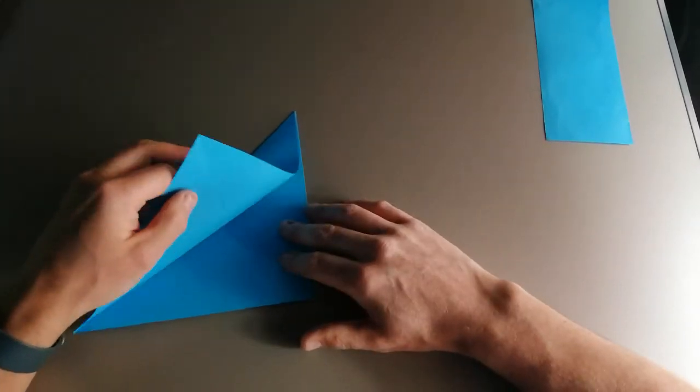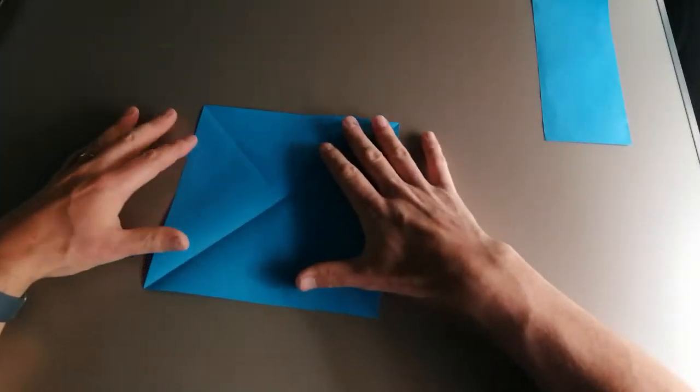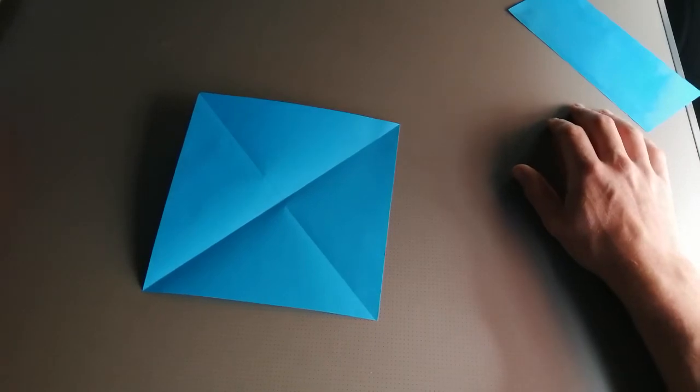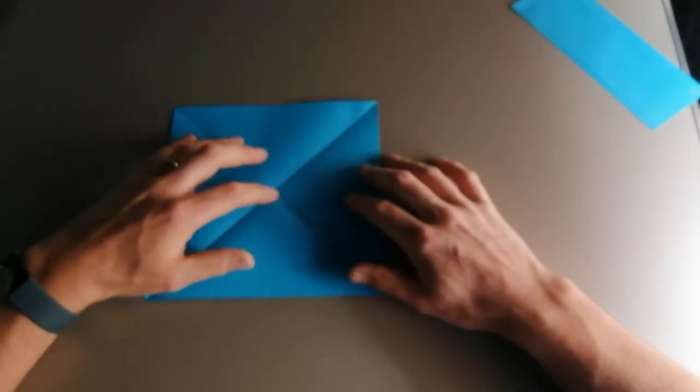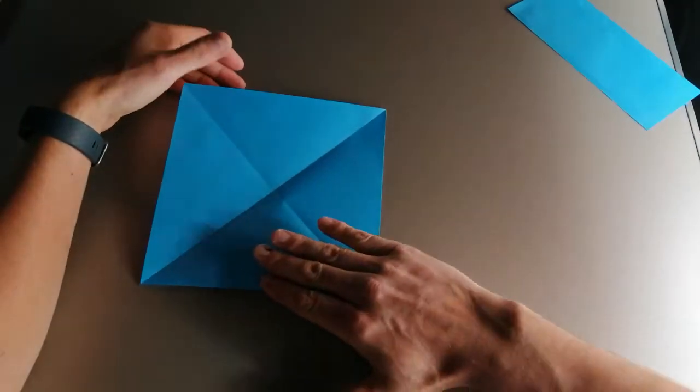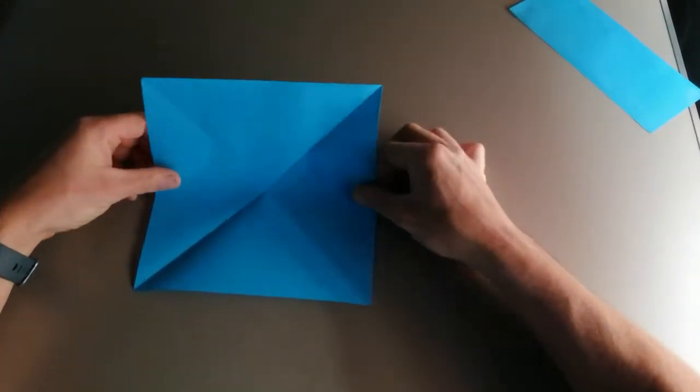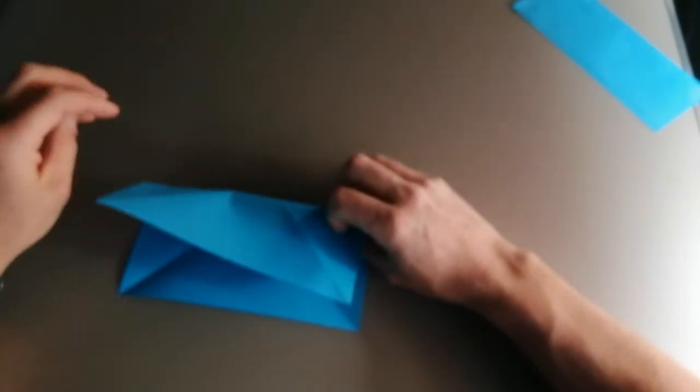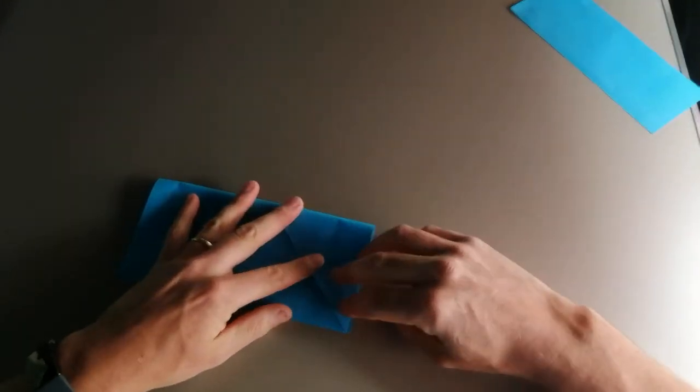Align all your edges so that you're happy with them before pressing down to create the crease. If we open this back up now, we can see that we have a cross pattern. Now what we want to do is fold the paper in half again, this time into a rectangle.